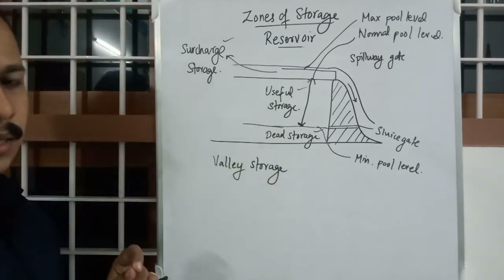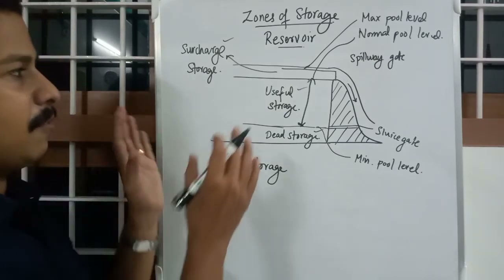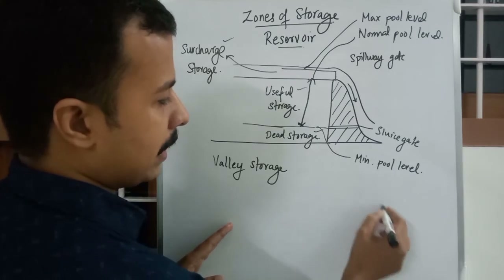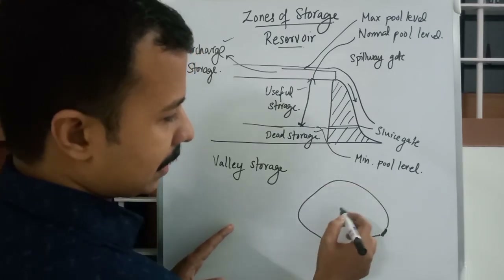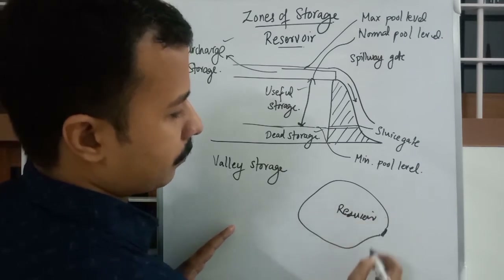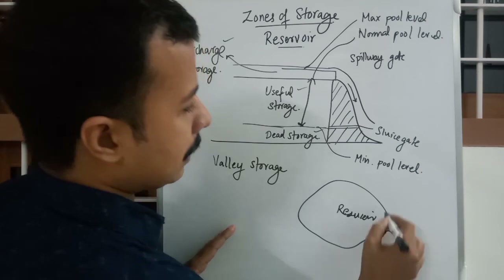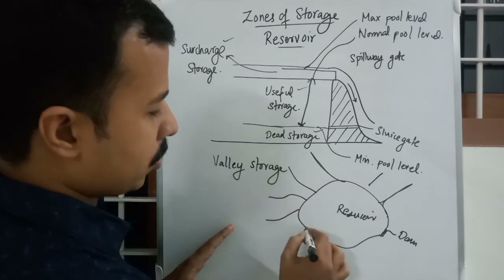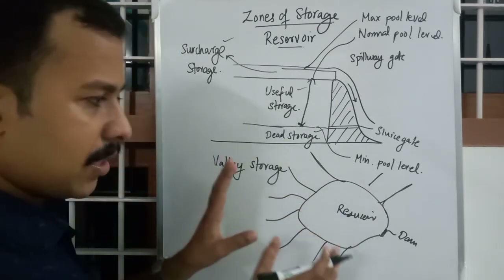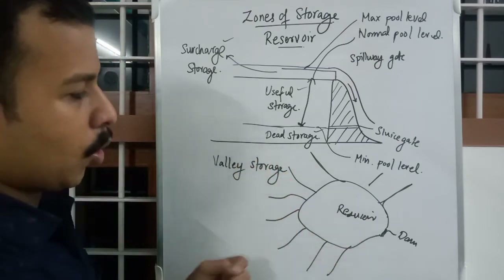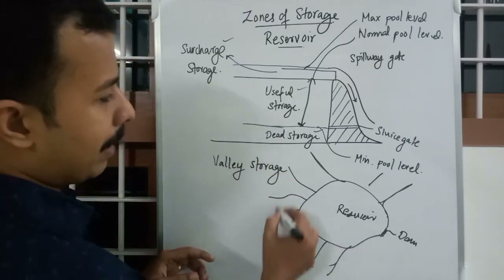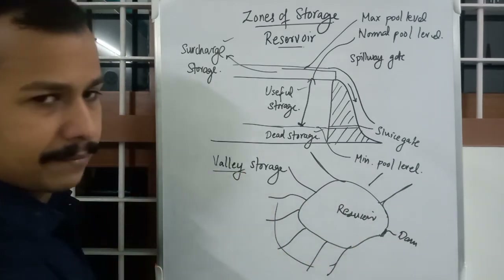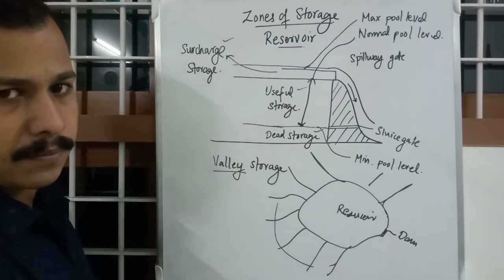Valley Storage is the water in the valley in which the reservoir is constructed. If this is the plan view of the area, with the reservoir and the dam, there will be a number of ponds or streams ready to join water to or draw water from the reservoir. This combined area is called the valley, and the large amount of water stored in this valley is called Valley Storage.